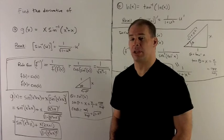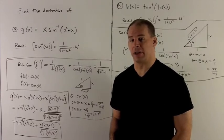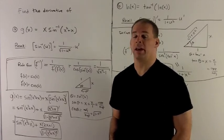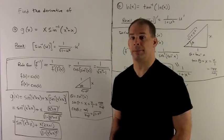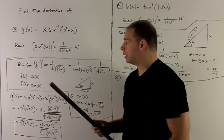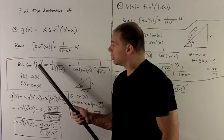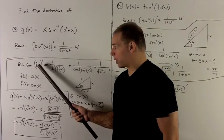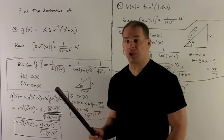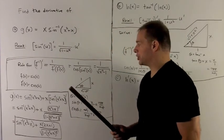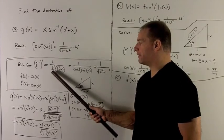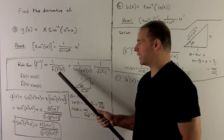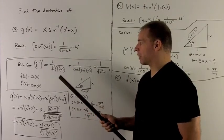Let's re-derive this. I like to work from first principles, so that way if I forget a formula, I have a shot of getting it back somehow. What's going to make this work is our rule for the derivative of an inverse function, which is just given by flipping over the derivative of your original function, and then evaluating at f inverse.